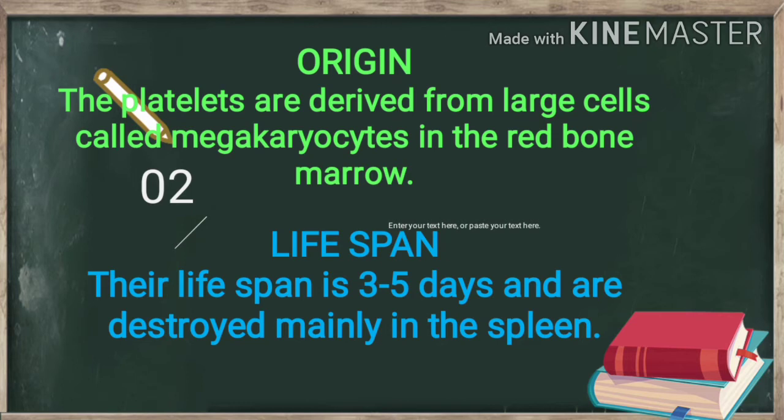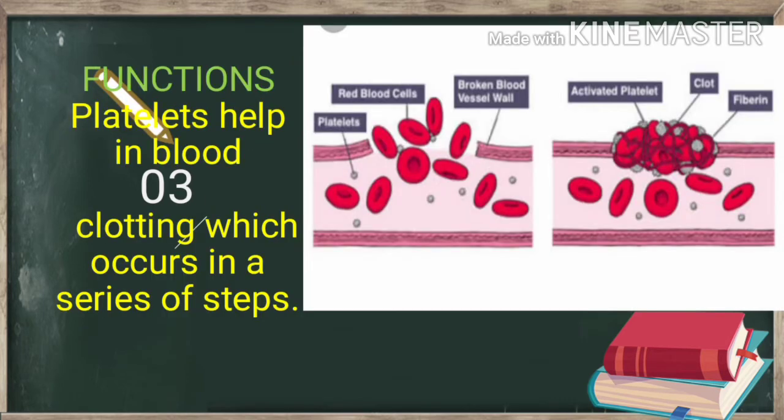Blood platelets are destroyed mainly in the spleen. The spleen is a lymphatic organ which is located in the abdominal region of our body.